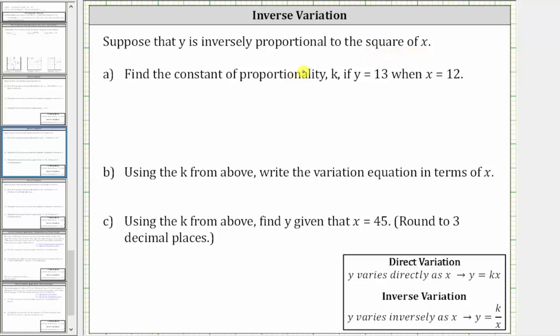And therefore, for this problem, we use the inverse variation equation y equals k divided by the square of x, or x squared.